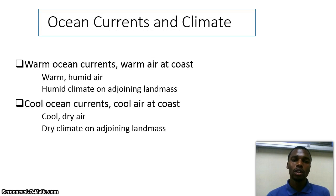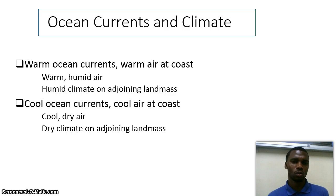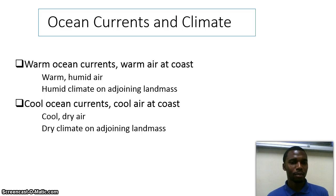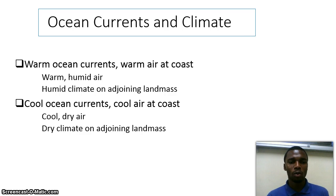We need to understand that a warm ocean current tends to warm the air over the coast, and it is also associated with warm, humid air and a humid climate. As we have over the eastern side of Southern Africa, the weather and climate is more humid over the east compared to the west. When we consider the cool ocean current, it produces cool and dry air and a dry climate — for example, what we have over Cape Town, on the western side of Southern Africa.